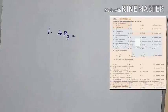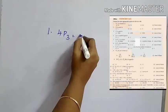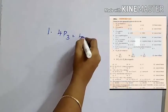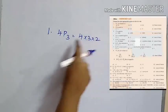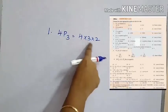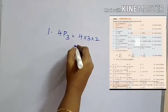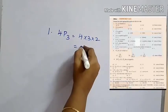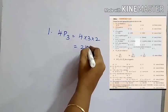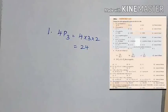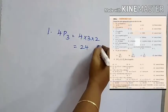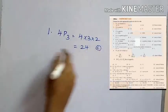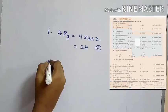The first question is: 4P3 is evaluated as. We have to decrease 4, three times, that is 4 × 3 × 2, which is 24. Option C is the answer.